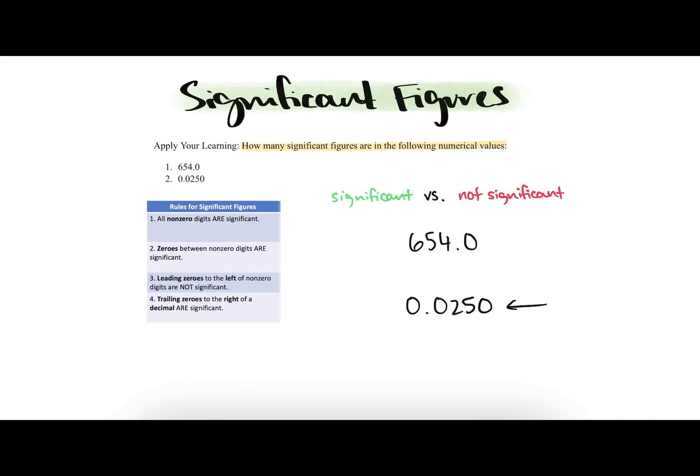So essentially we're just going to go from left to right in each value and look at each digit, and based on the rules we will determine whether they are significant or not significant. Then we can determine how many total significant figures are in the numerical values. So let's start with 654.0.